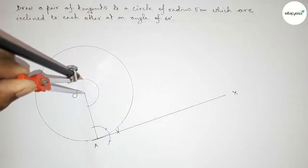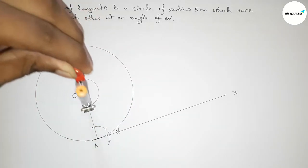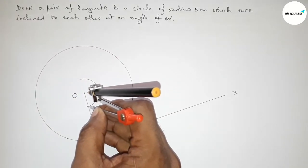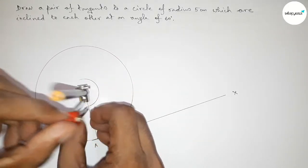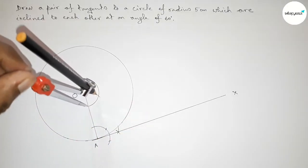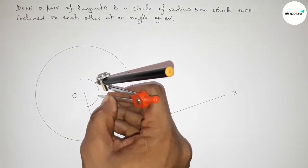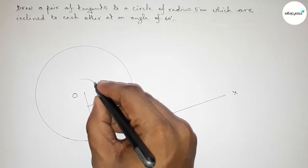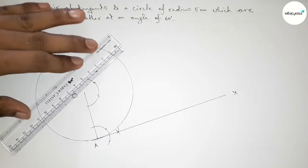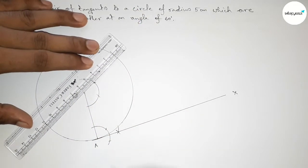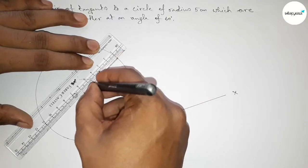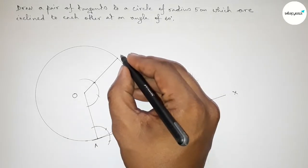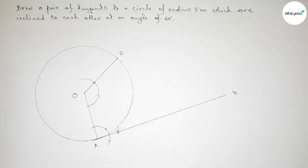Now we have to draw a 120 degree angle on point O. Taking any length and drawing an arc using the compass, then putting the compass with the same length — cut here 60 degrees, then cut here again. This gives us 120 degrees.